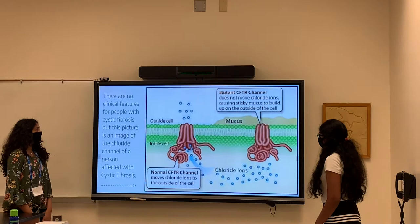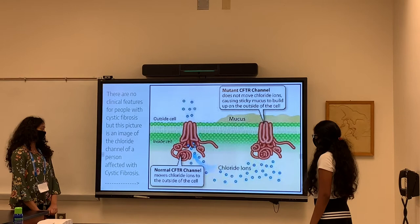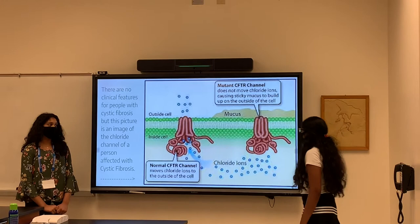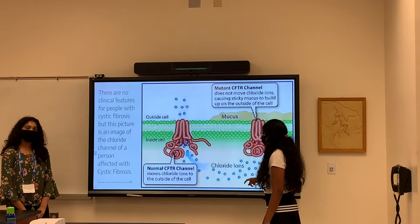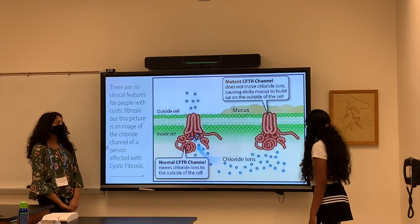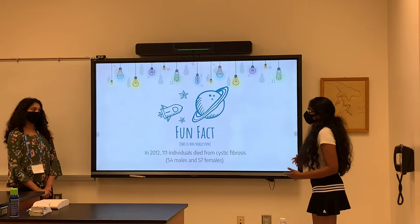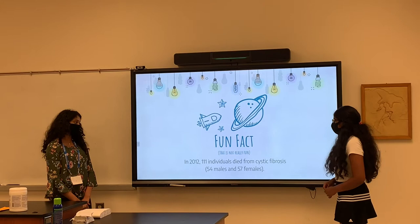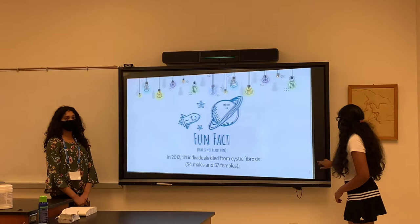There is an image of the chloride channel of a person affected with the CFTR mutation. In the normal CFTR channel, the chloride ions are able to move through, but in the mutant CFTR channel, they are not able to move through because of the mutation. As a sobering fact, in 2012, 111 individuals died from Cystic Fibrosis — 54 males and 57 females.